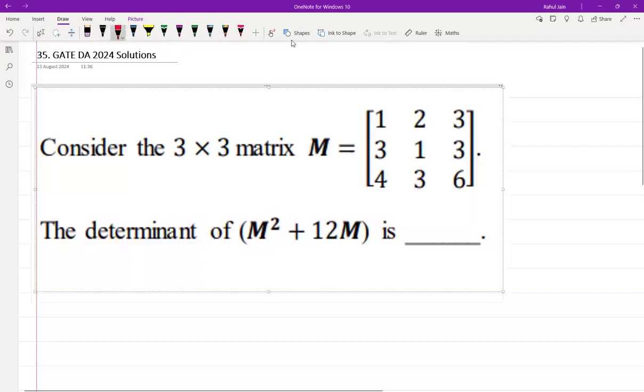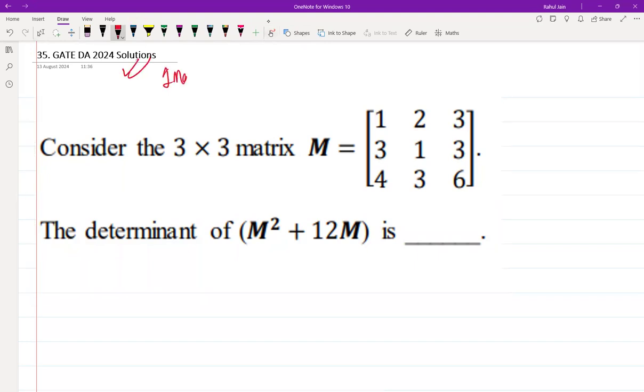The following question was asked in GATE DA 2024 for one mark, and the nature of question was NAT, numerical answer type. The question is: consider the 3×3 matrix M. The determinant of M² + 12M is...